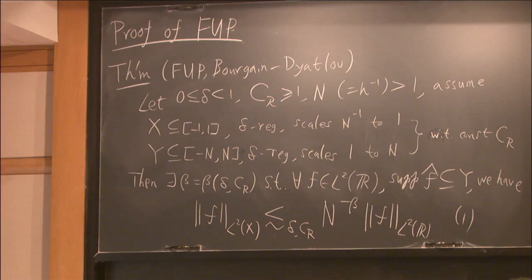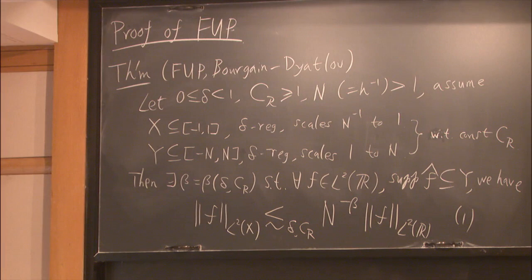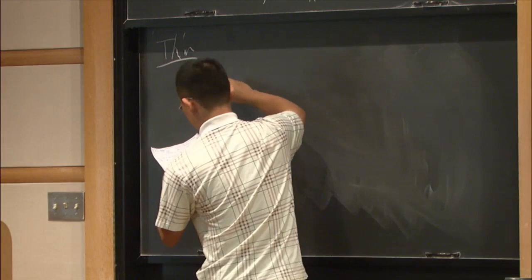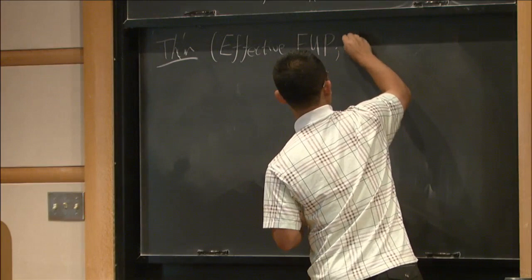One thing worth mentioning is that in the original proof of this, the power saving beta was presumably very small, at least for the discrete set. For the Cantor set, you get something like a double exponential, which is very weak. And in the original proof, this beta wasn't effective because there was some contradiction argument involved. But there are multiple ways to work out an effective beta. There's a result by Long and myself which is just a refinement of this, making beta effective.